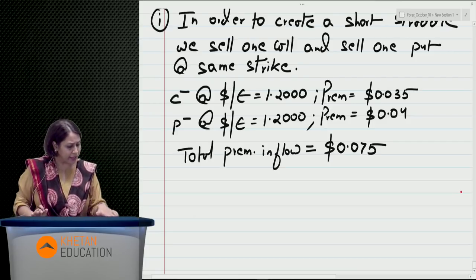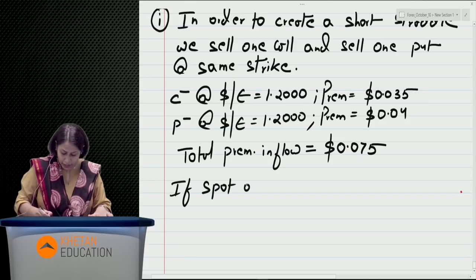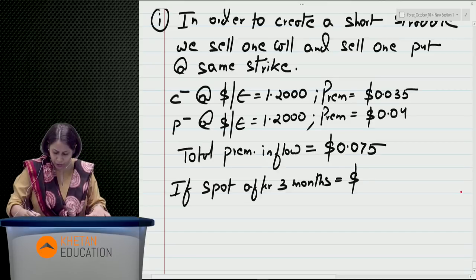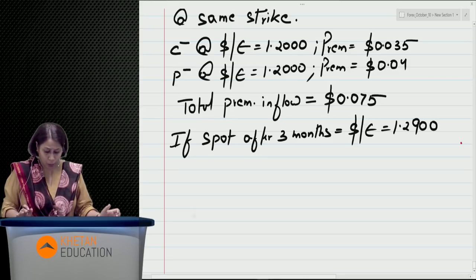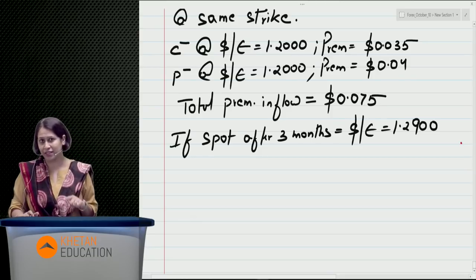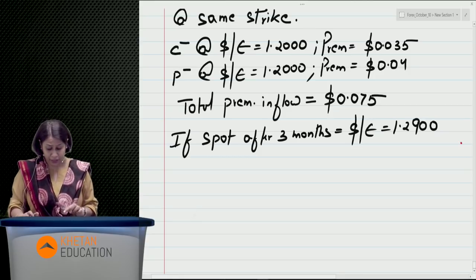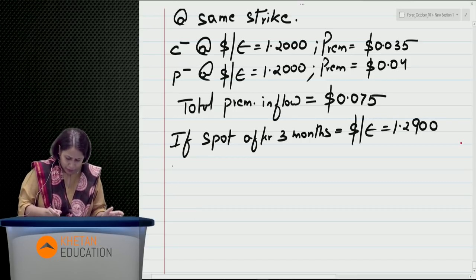Total premium inflow will be 0.035 plus 0.04, giving dollar 0.075. This money has already come to us. Now the question asks: calculate gain or loss if three months later the spot rate is dollar per euro 1.2900.